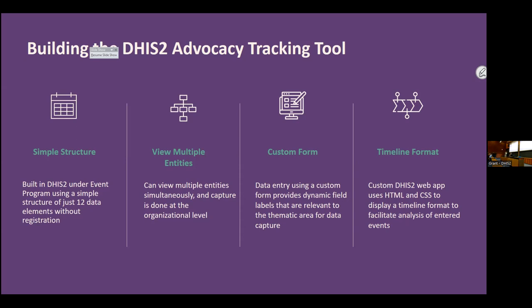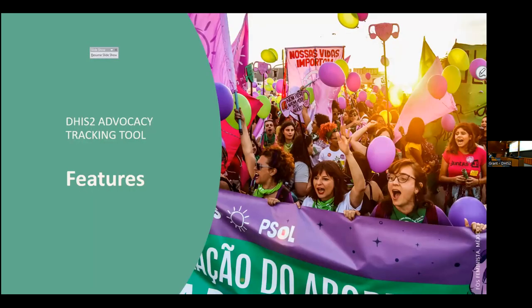With this model in mind, we enlisted the help of KTT, a consulting firm that helps NGOs leverage DHIS2 to improve health outcomes. With KTT's help, we developed our advocacy tracking tool. Technically, it uses a simple structure built in DHIS2 under event program — just 12 data elements without registration. Users can view multiple entities simultaneously. Data entry uses a custom form with dynamic field labels. It's a custom DHIS2 web app using HTML and CSS to display a timeline format to facilitate analysis.